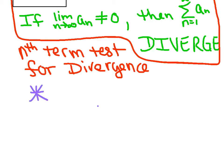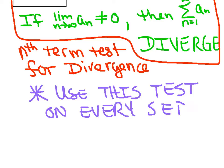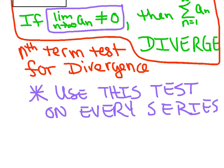Put a big asterisk in your notebook: we're going to use this test on every series we see this year. You're probably not going to show any evidence of it on paper — it's something we are going to mentally do. We're going to mentally evaluate the limit of the nth term in our heads. It's very easy — all it is is the power fight, taking literally one second. If that limit doesn't equal zero, you can instantly say the series diverges. Done! Move on to the next problem.